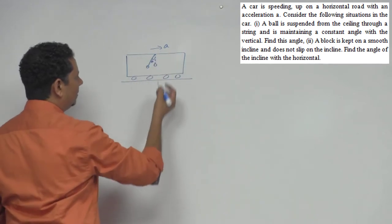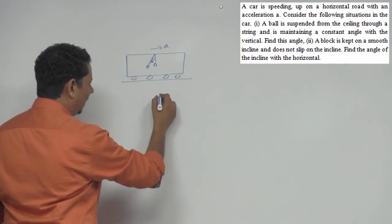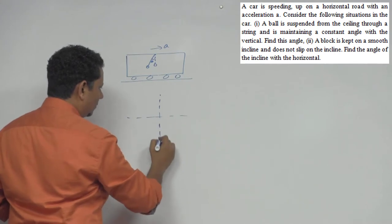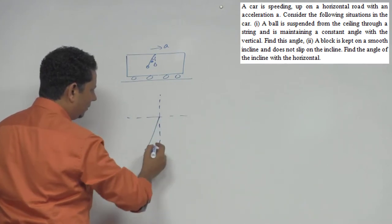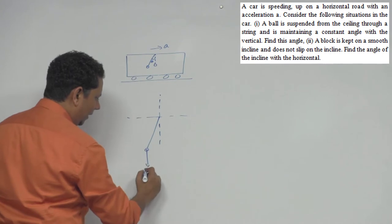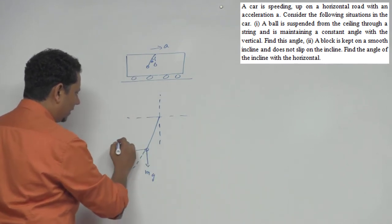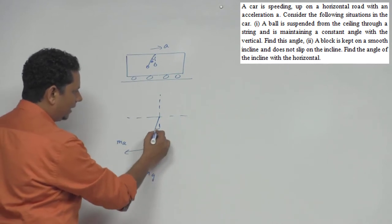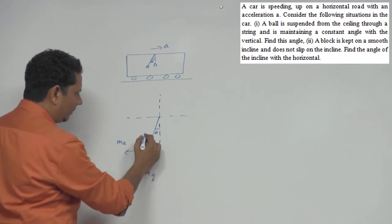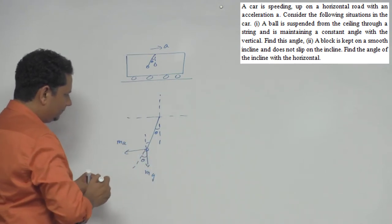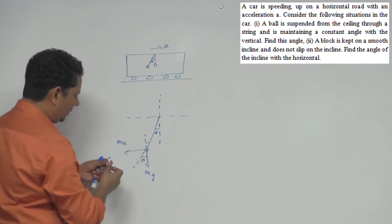Let me draw the FBD. So this is vertical, horizontal. This is the angle theta. So the FBD: you can see the force is mg and this is the force ma. Now if you take components, this angle is theta and this angle is theta.